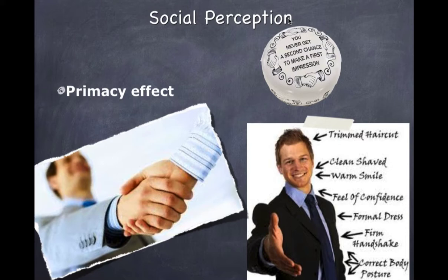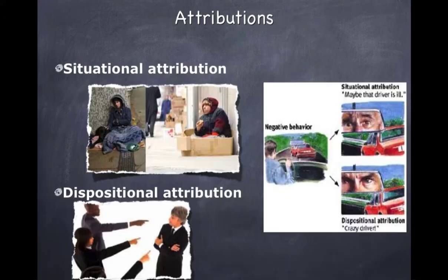There's an element in our perception — the way we explain other people's and our own behavior — that's called attributions. This is the assignment we make about the cause to explain either our behavior or someone else's behavior, and there are two types of attributions: situational and dispositional.